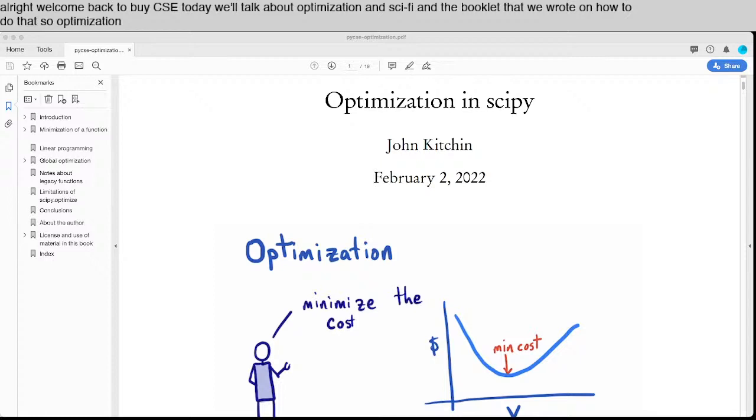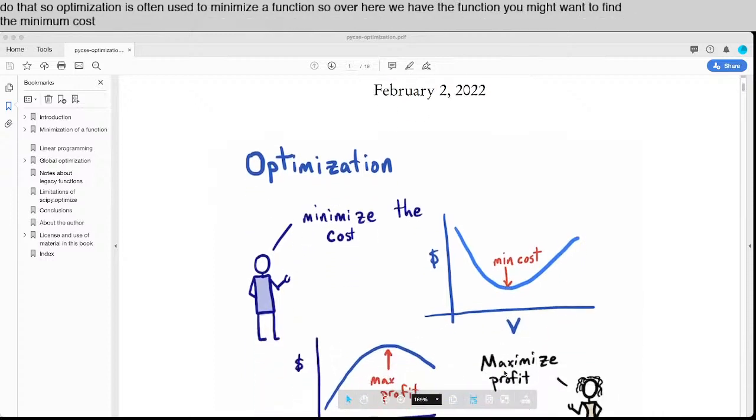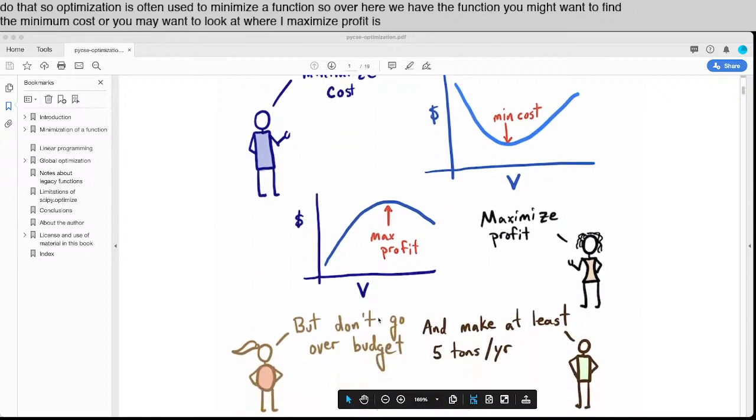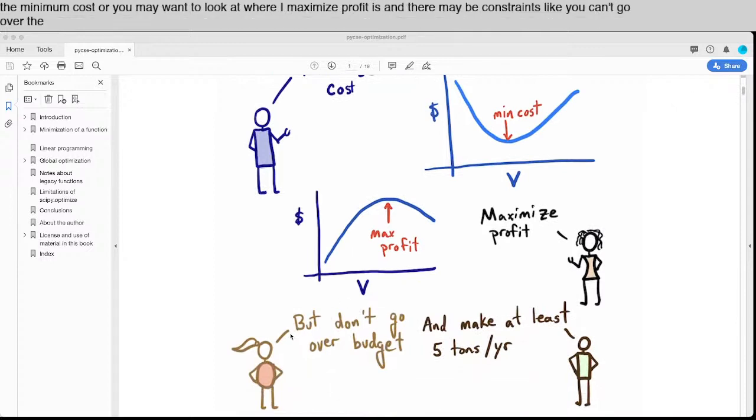Optimization is often used to minimize a function. Over here we have a function you might want to find the minimum cost, or you may want to look at where a maximum profit is. There may be constraints like you can't go over the budget, you have to make at least a certain amount per year, or the volume has to be positive. All of those are constraints or bounds on your problem.